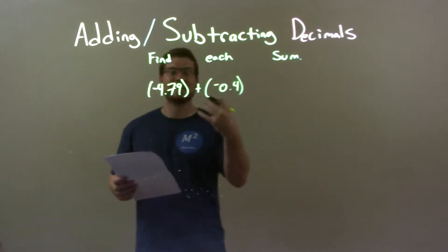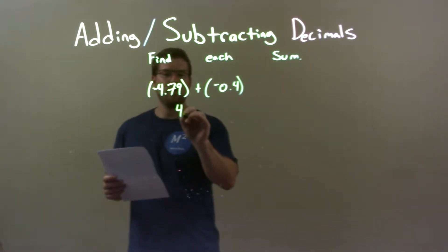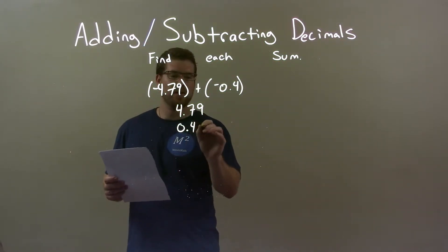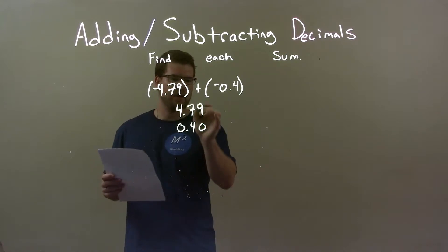So, what I'm going to do is just treat it like it's an addition problem without the negatives, 4.79 and then I add 0.4 and make sure we've lined up the decimals and I'm going to add another 0 here so it's lined up.